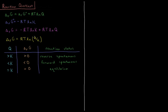If Q is greater than K, then we have the natural log of a number greater than one, which is a positive number. R and T are both positive as well, so if our reaction quotient is greater than K, our Gibbs energy of reaction is positive. This means the reaction is not spontaneous in the forward direction, but since the reverse reaction has the negative ΔG, the reaction is spontaneous in the reverse direction.